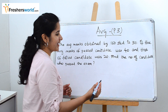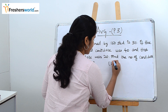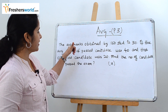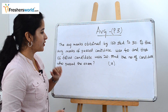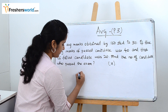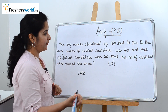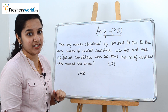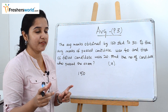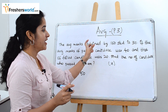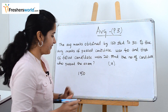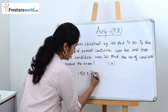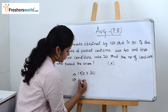So let's take the number of candidates as x. First, what they have given: the total number of students is 150 and their average marks is 30. To find the overall number, we should multiply the number of students by the average. So 150 into 30 is nothing but 4500.